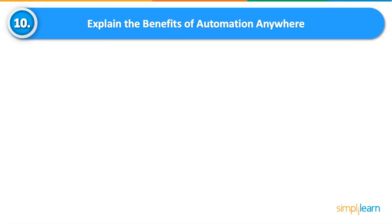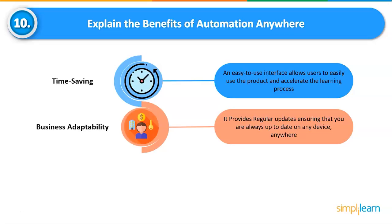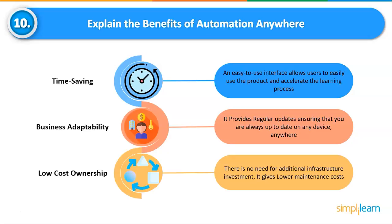Explain the benefits of Automation Anywhere. Time Saving: an easy-to-use interface allows users of varying skill levels to use the product and accelerate learning; with instant web-based deployment, you can start writing bots right away. Business Adaptability: Automation Anywhere provides regular updates, continuity of operations with high availability, and disaster recovery. Low Cost of Ownership: no need for additional infrastructure investment; it provides a unified platform for front office, back office, and employee applications with lower maintenance cost.